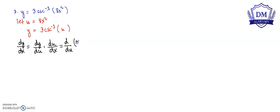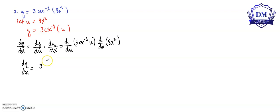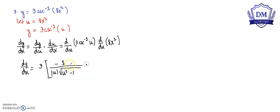We have d over du of 3 times the inverse cosecant of u, times d over dx of 8x squared. So dy over dx equals 3 times the derivative of the inverse cosecant of u, which is negative 1 all over u times the square root of u squared minus 1, multiplied by the derivative of 8x squared, which is 16x.